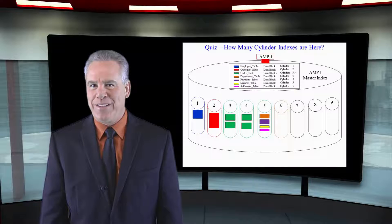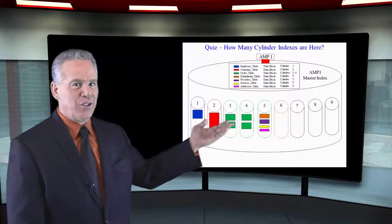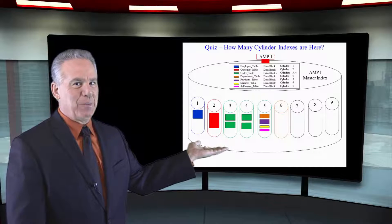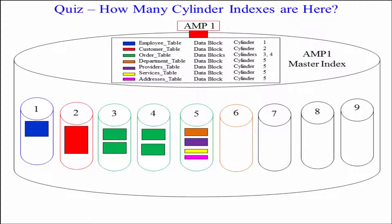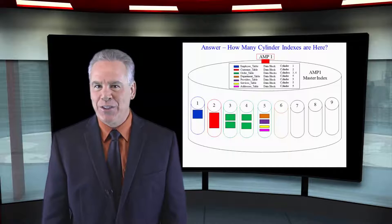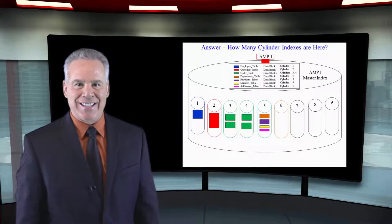Another very difficult question. How many cylinder indexes do you see in this picture? There are nine cylinders in the picture. That means there will be nine cylinder indexes.